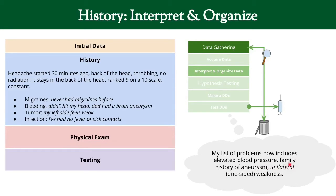We're going to start using some medical terms here called semantic qualifiers — terms that help us characterize something better. They're usually paired opposites: unilateral versus bilateral, chronic versus acute. Chronic means something that's been there a while; acute means something that just started. We use these terms because they help us. At this point we've interpreted and organized our data into a problem list, noting the family history and unilateral weakness.